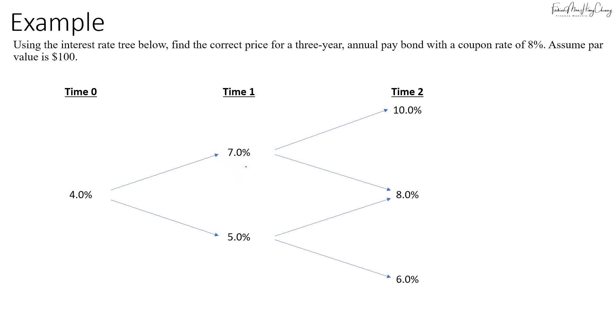Now let's say we are given the interest rate tree below and we are asked to find the correct price for a three-year annual pay bond with a coupon rate of 8% and a par value of $100. If you plot the cash flow on the timeline, we will have coupons of $8 in year 1, 2, and 3.